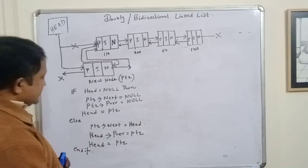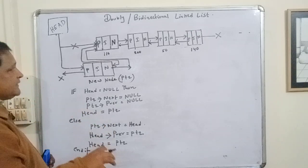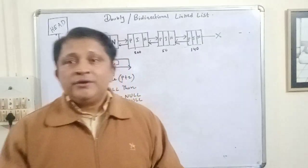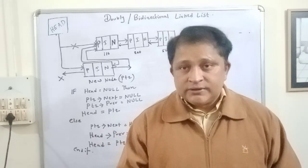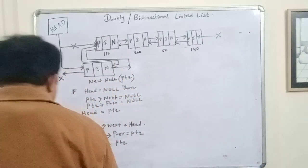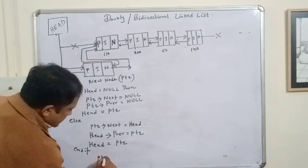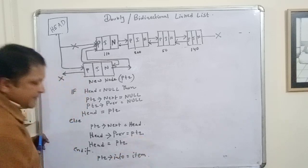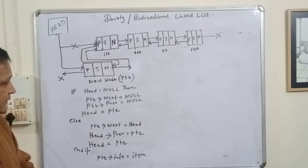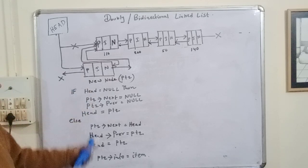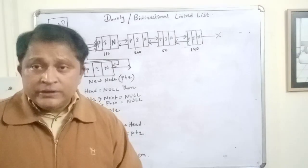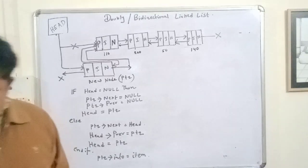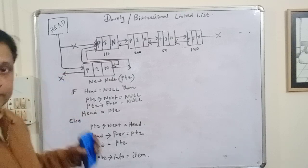One more important thing: we are not only creating the node at the beginning but also need to insert the value into it. So PTR->info will contain the item entered by the user. This is the algorithm for how a new node can be inserted at the beginning of the doubly linked list.